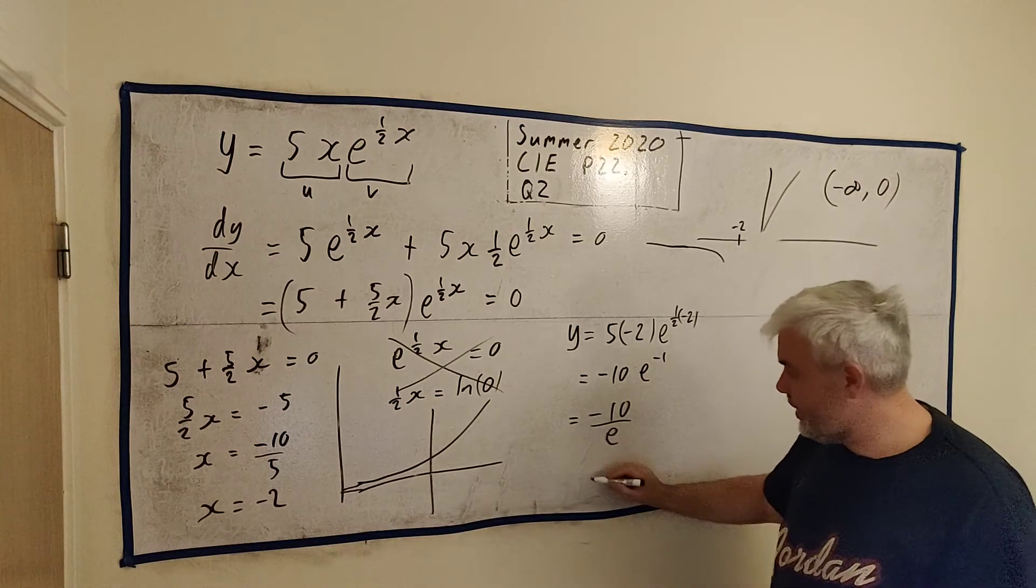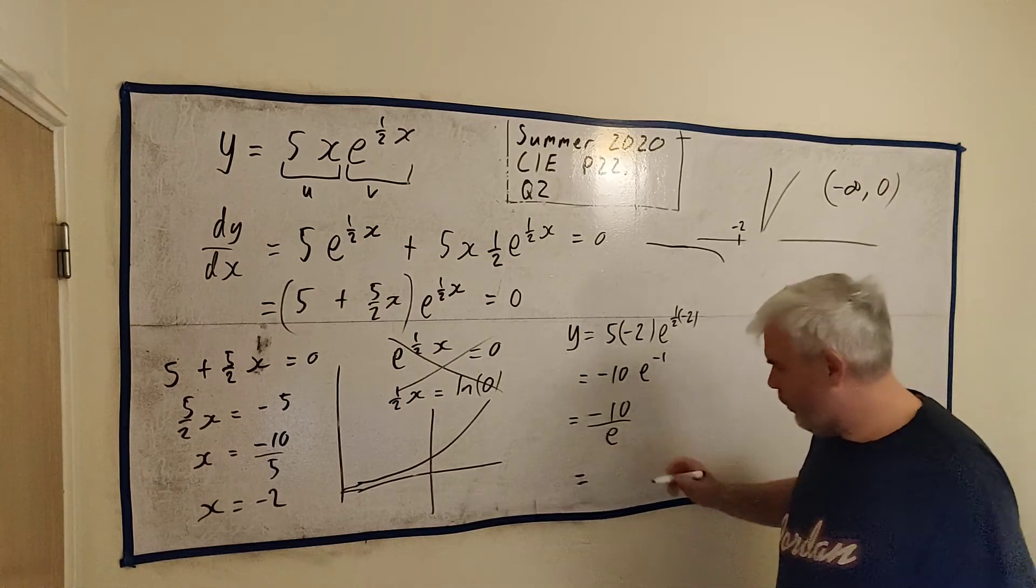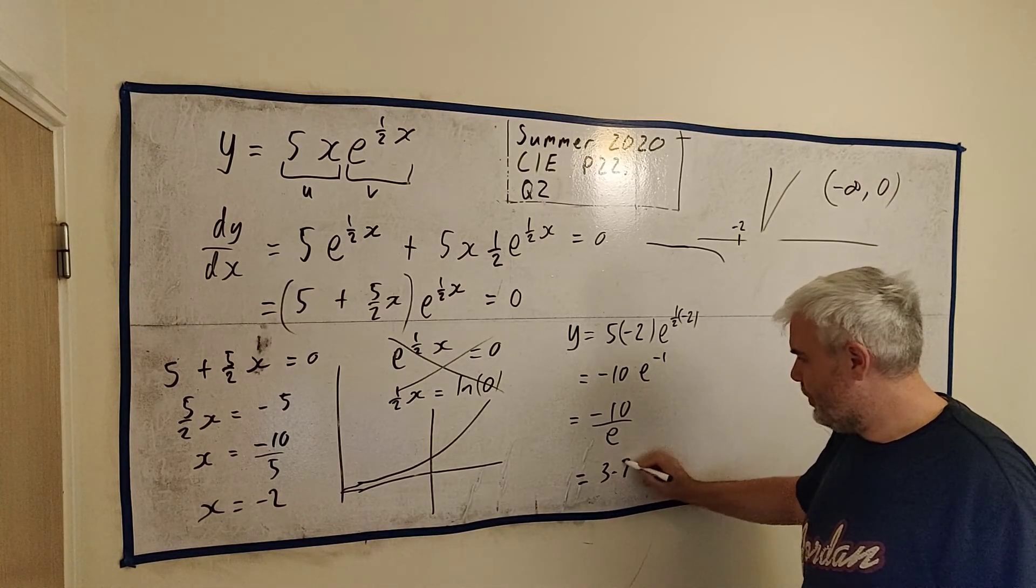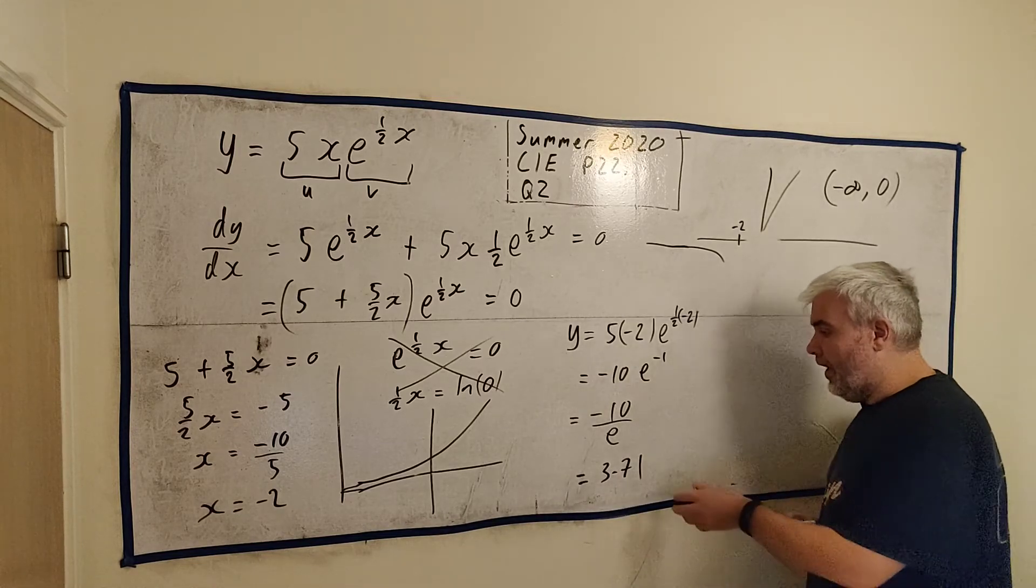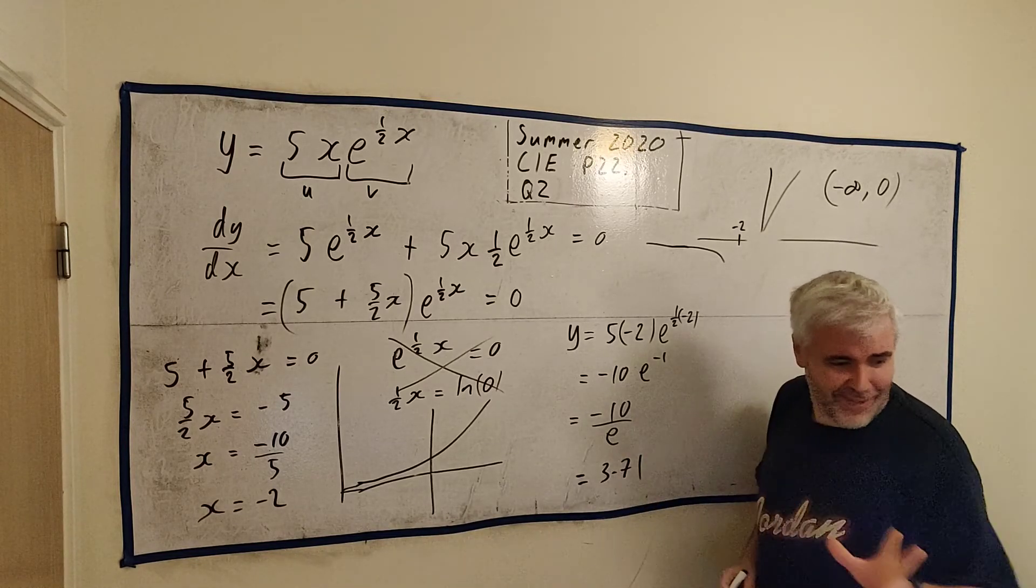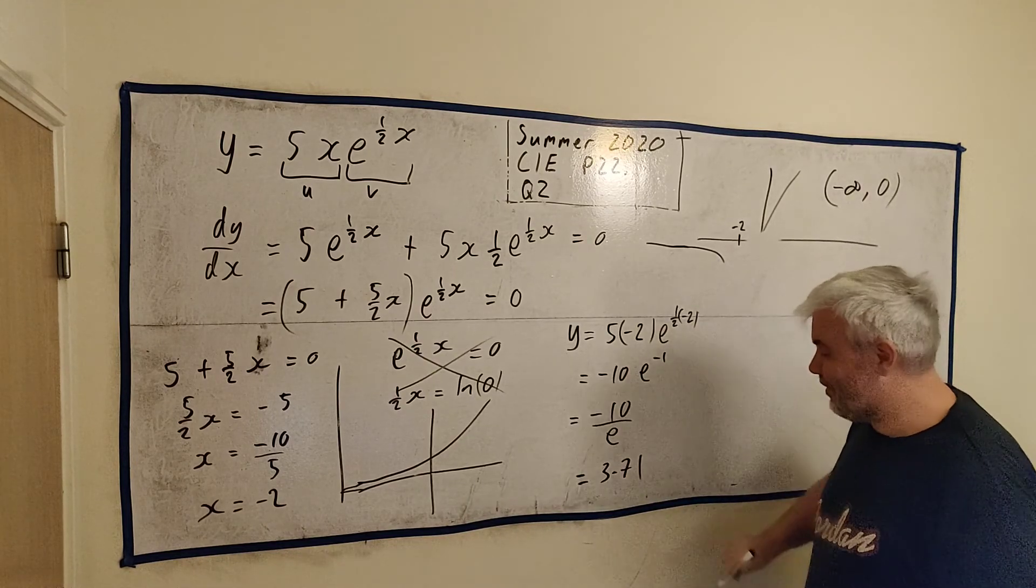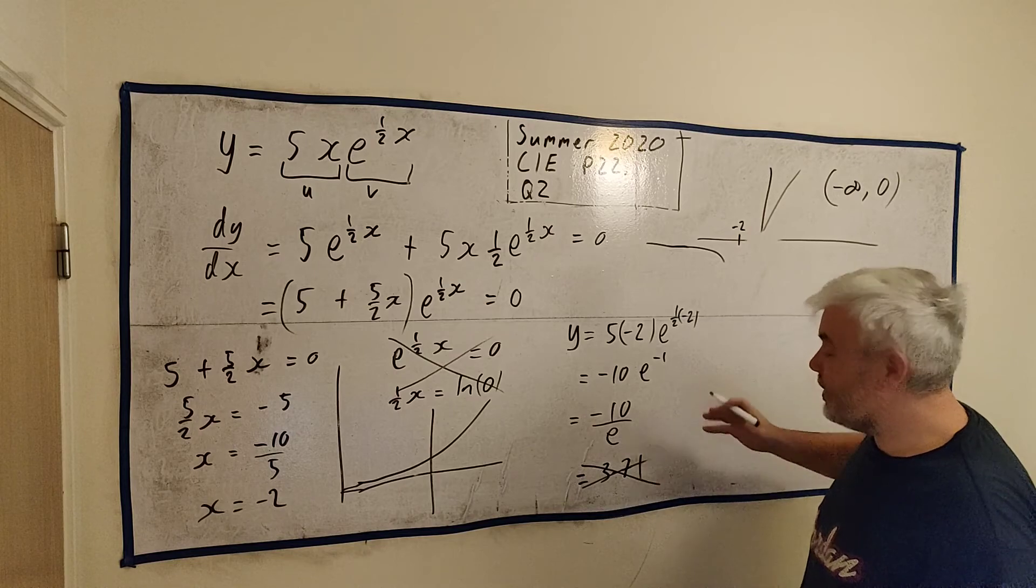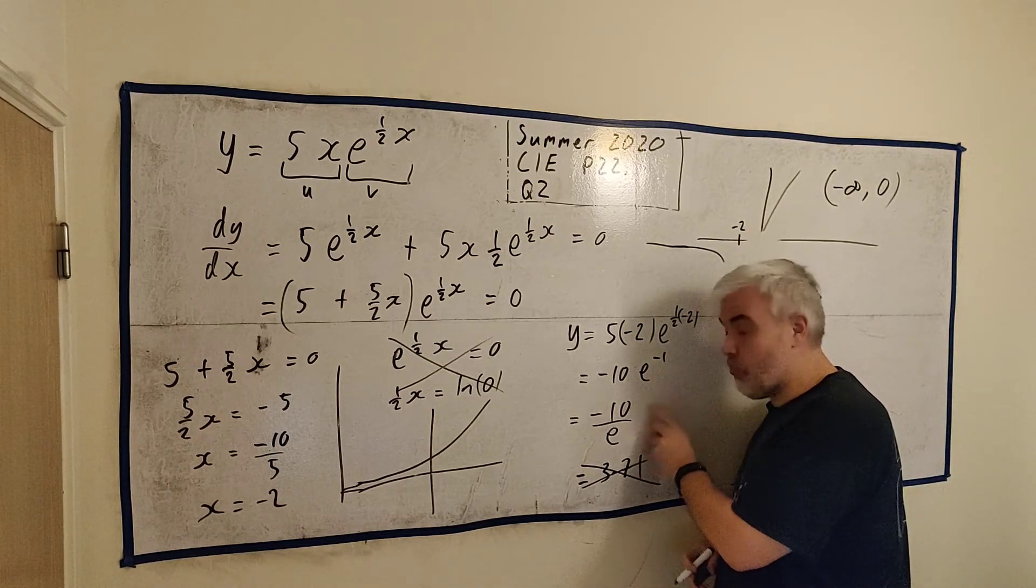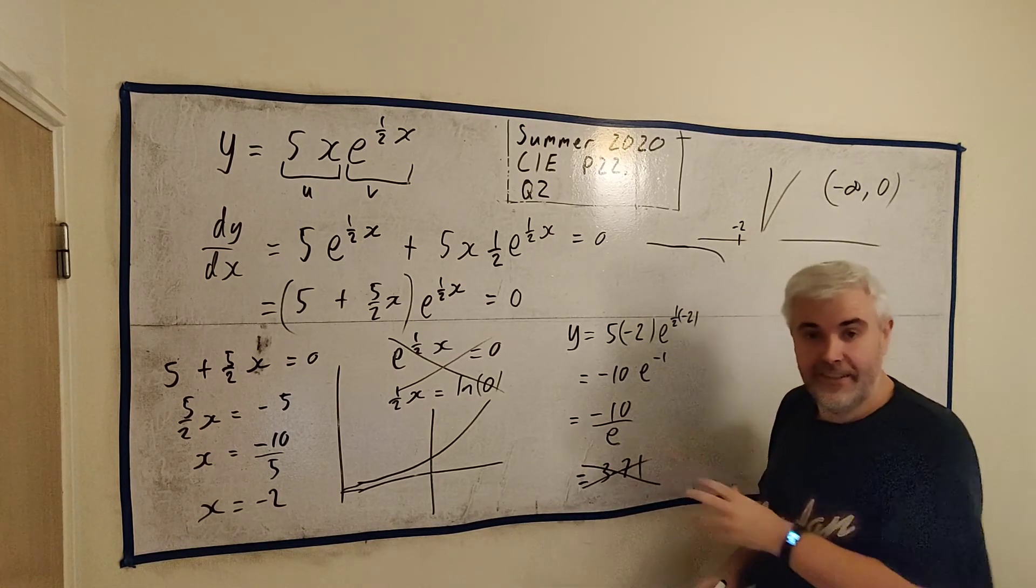That's why they had the word exact in the question. So you need to leave this. If you wrote, if you put this in a calculator, and I don't know what the number will come out as, 3.71, let's say. Even if this is correct, which it's probably not. I haven't checked in the calculator. They would take a mark away because you misread the question. You misread exact. They want this. They rather this than this.